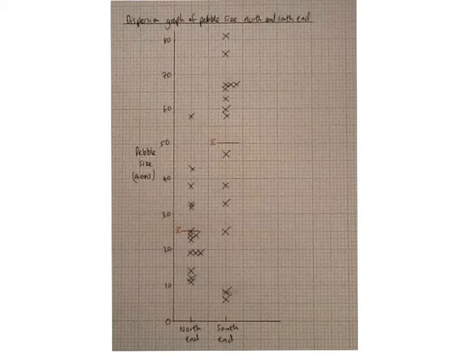Now let's plot the mean for the north end which is 26.3 millimeters and the mean for the south end which is 50.8.